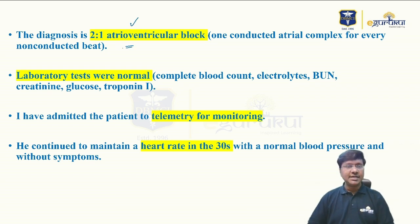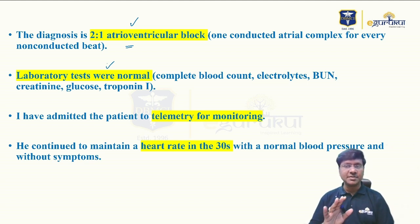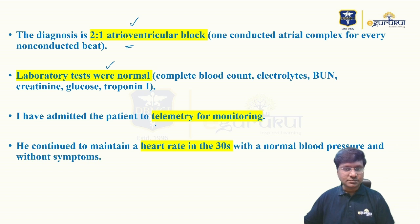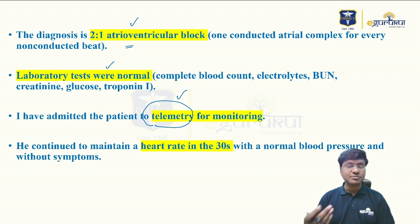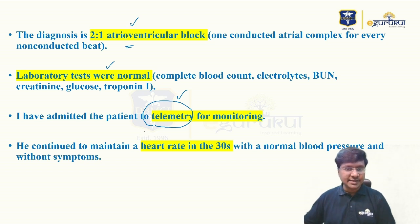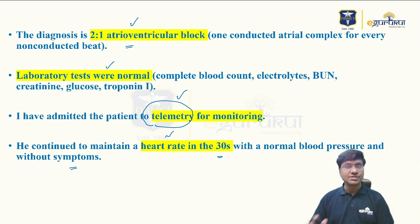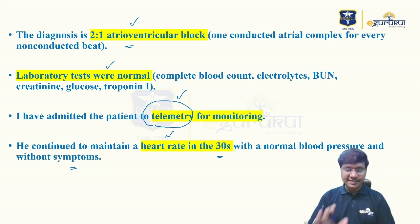I diagnosed this as a 2:1 AV block and performed laboratory tests to look for any underlying cause. Complete blood count, electrolytes, blood urea nitrogen, creatinine, glucose, and troponin were all normal. I then admitted the patient to the telemetry unit for extended heart rate monitoring. In the telemetry unit the heart rate was around 30 beats per minute with normal blood pressure and without symptoms at rest.